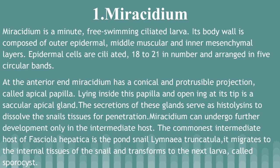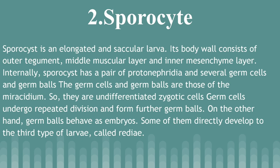Sporocyst is an elongated and sacular larva. Its body wall consists of an outer tegument, middle muscular layer, and inner mesenchymal layer. Internally, the sporocyst has a pair of protonephridia and several germ cells and germ balls. The germ cells and germ balls are those inherited from Miracidium; they are undifferentiated zygotic cells. Germ cells undergo repeated division to form further germ balls, while germ balls behave as embryos.